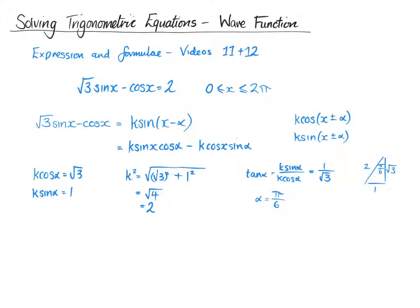Right, so that is giving us now that we can rearrange this to say that 2 sin of x minus pi over 6 is equal to 2. Right, so we can rearrange again to give us that sin of x minus pi over 6 is equal to 1. And by dividing both sides by 2.